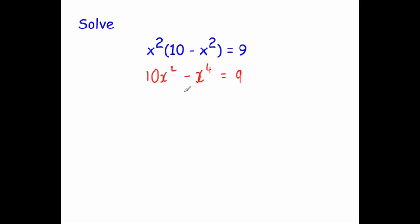Now we're going to bring everything over to the right-hand side so we get a positive x⁴. That will be 0 = x⁴ - 10x² + 9.